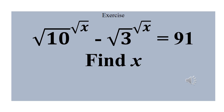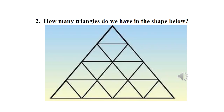For our next exercise: find x if the square root of 10 raised to the power square root of x, minus the square root of 3 raised to the power square root of x, equals 91. Question two: how many triangles are in the shape below? Until we meet next class, don't forget to subscribe, share the video with your friends, click the notification button, and like the video. Thank you.